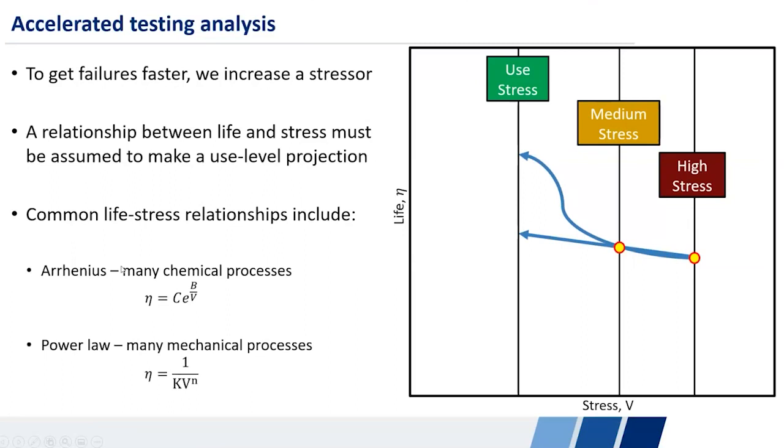And so two really common ones, there are a whole bunch of these, but two really common ones, just so you have some sort of sense of what the flavor of these are, is the Arrhenius relationship and a power law relationship. So the Arrhenius relationship comes from an equation that describes chemical reaction rate in terms of temperature. So if your failure mode is some sort of chemical process, corrosion or oxidation, and your accelerating stressor is temperature, this could be an accurate way to project back to the use condition. Whereas the power law matches up quite nicely with the equations describing some types of mechanical failure modes.